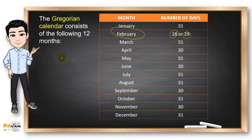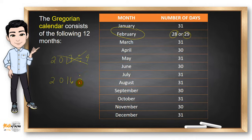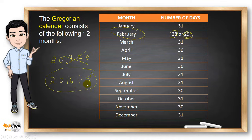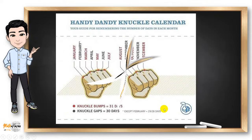We can know if the year is a leap year if it is divisible by 4. 2017 is not divisible by 4, so this is not a leap year. But 2016 is divisible by 4, so 2016 is a leap year. For those who forgot the divisibility rule, 2016 is divisible by 4 because it has no remainder when divided by 4. 2017 has a remainder when divided by 4, so 2017 is not divisible by 4.